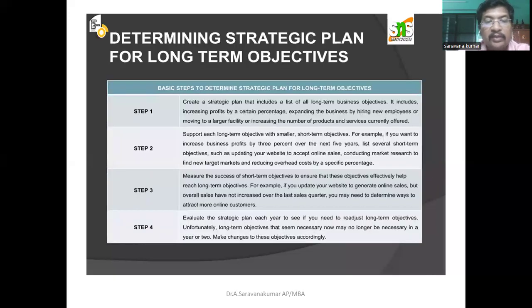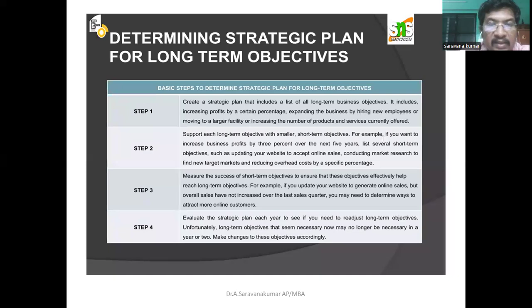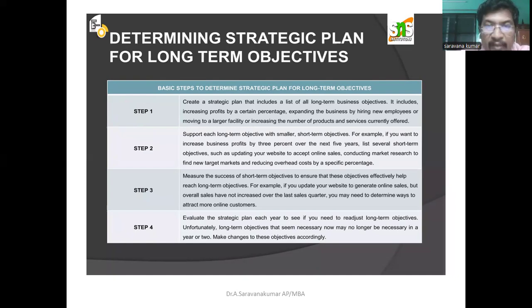Next, we are going to discuss determining a strategic plan for long-term objectives. There are four basic steps. Step one: create a strategic plan that includes a list of all long-term business objectives.